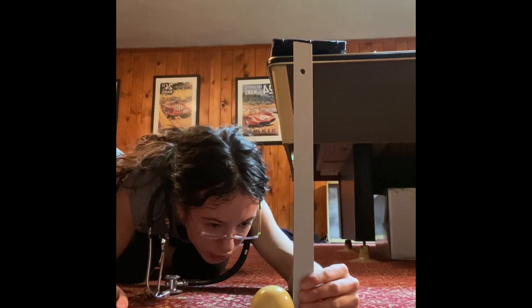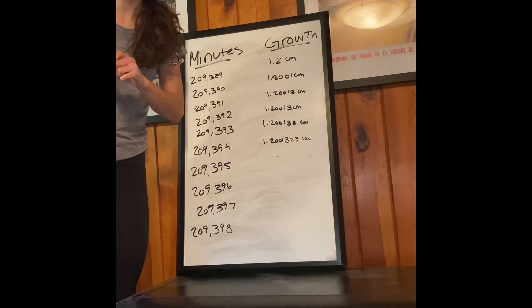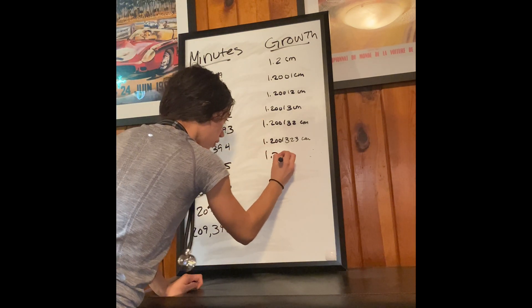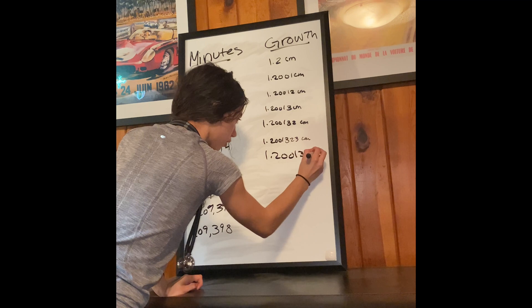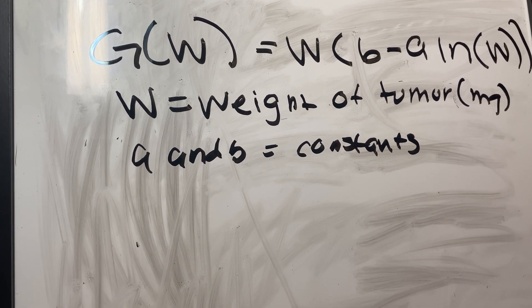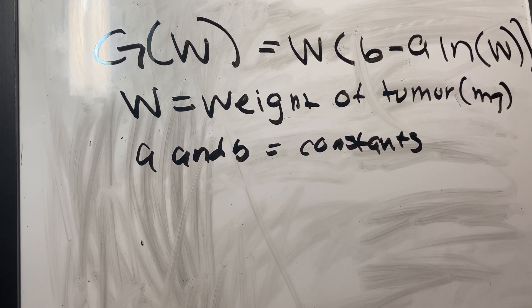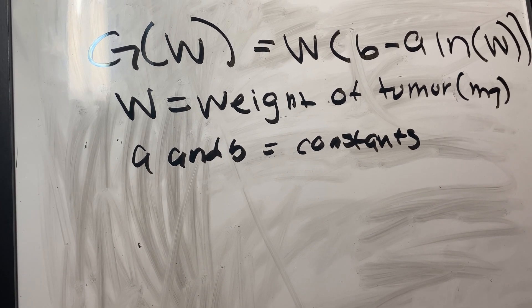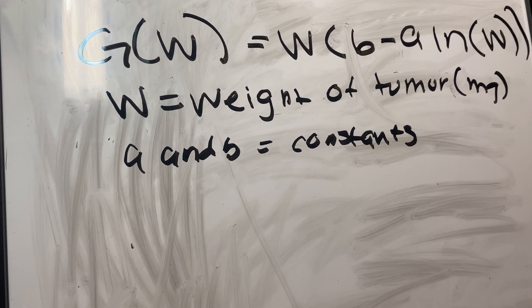And I know what you're thinking — 1.200133 centimeters. Instead of going through all that work, we use the Gompertz equation, which looks like this. G of W equals W times B minus A times the natural log of W, where W is the weight of the tumor in milligrams, and A and B are constants from your data.